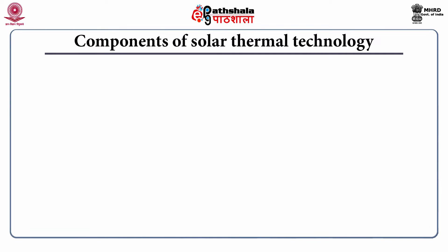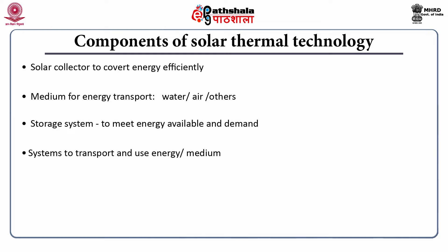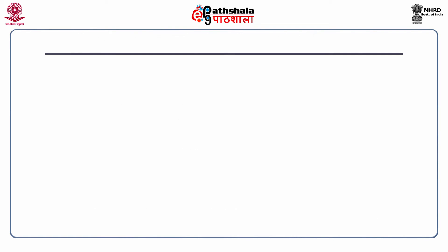Let's start with the components of solar thermal technology. The major one is the solar collector — the main component of a solar thermal system that converts energy efficiently. The other components include the medium for energy transport, which can be water or another medium; a storage system to meet the energy available and the demand; systems to transport and use the energy; and control systems. The principle of solar thermal technology is the conversion of solar energy into heat energy by absorbing it.